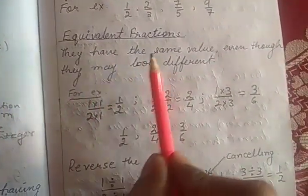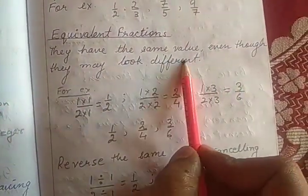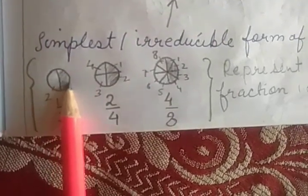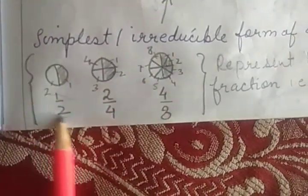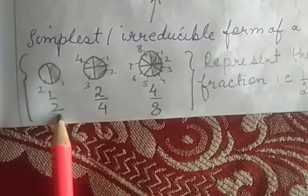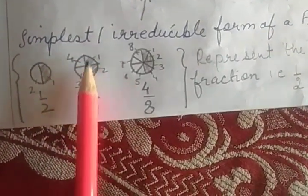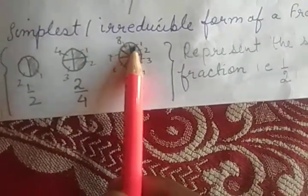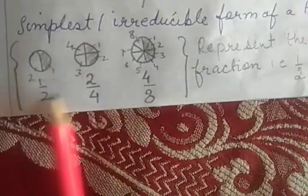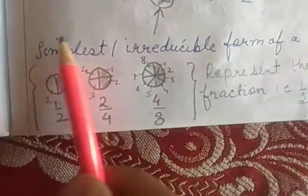Equivalent fractions have the same value even though they may look different. For example, dividing a circle into 2 parts — shaded part is 1 by 2. If we take 4 parts with 2 shaded, that is 2 by 4. In 8 parts with 4 shaded, that is 4 by 8. But if you try to make them in simpler form, they all will be 1 by 2. So they are equivalent fractions.